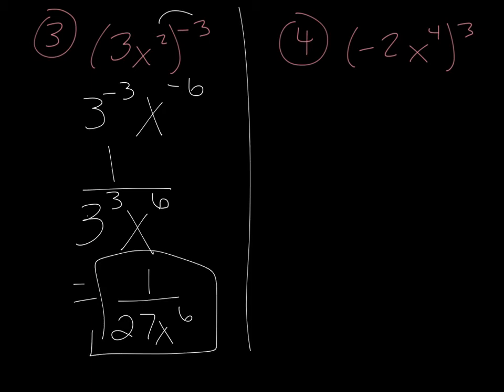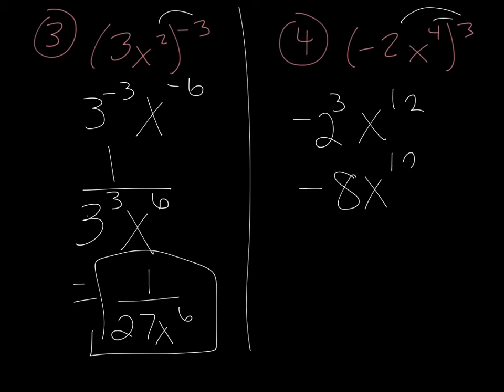Number 4: the quantity negative 2x to the fourth, all of that to the third power. We're going to distribute that third power — this is a power to a power — so it becomes negative 2 to the third times x to the twelfth. You actually have to calculate negative 2 to the third: negative 2 times negative 2 times negative 2 gives you negative 8x to the twelfth, because a negative times a negative is a positive, and then a positive times a negative goes back to negative.